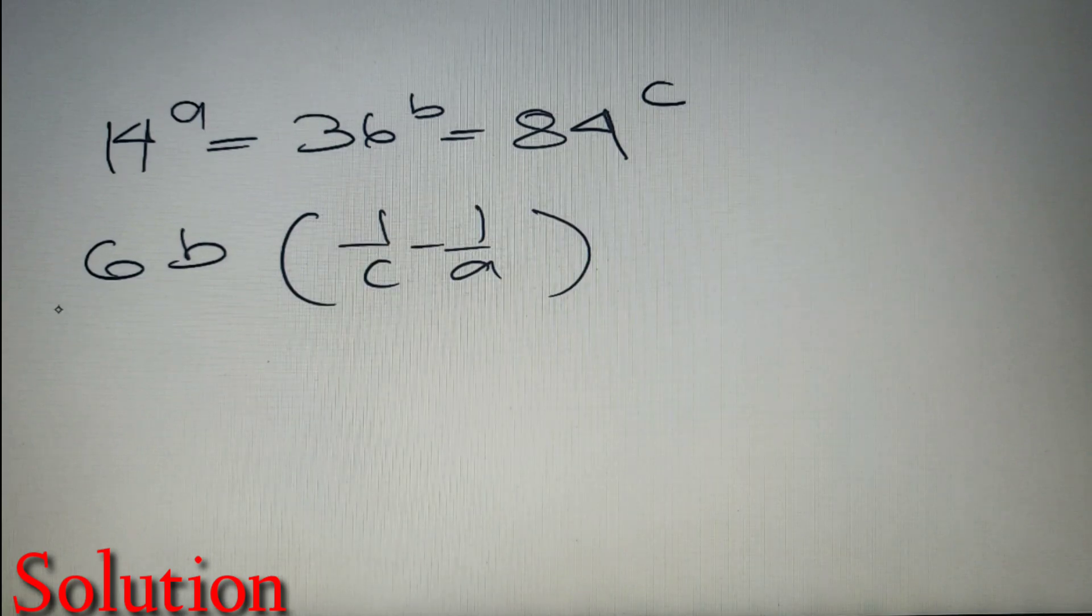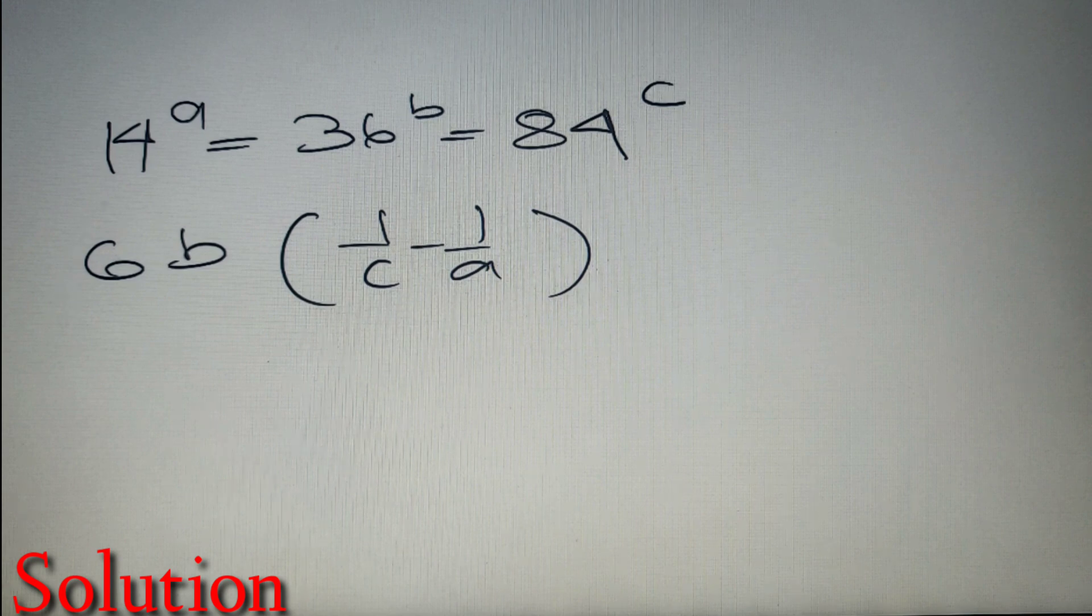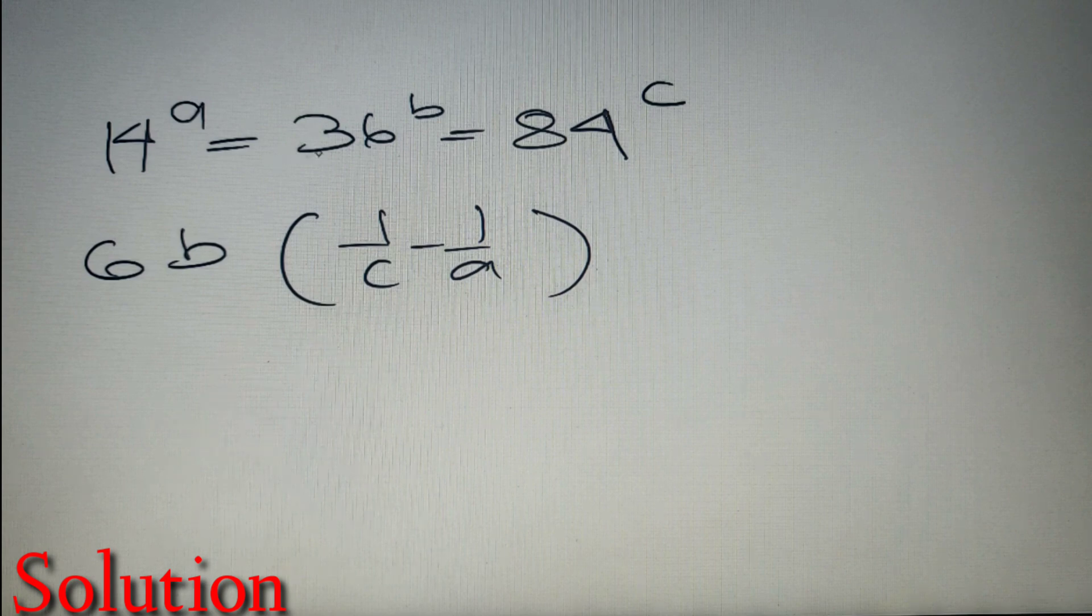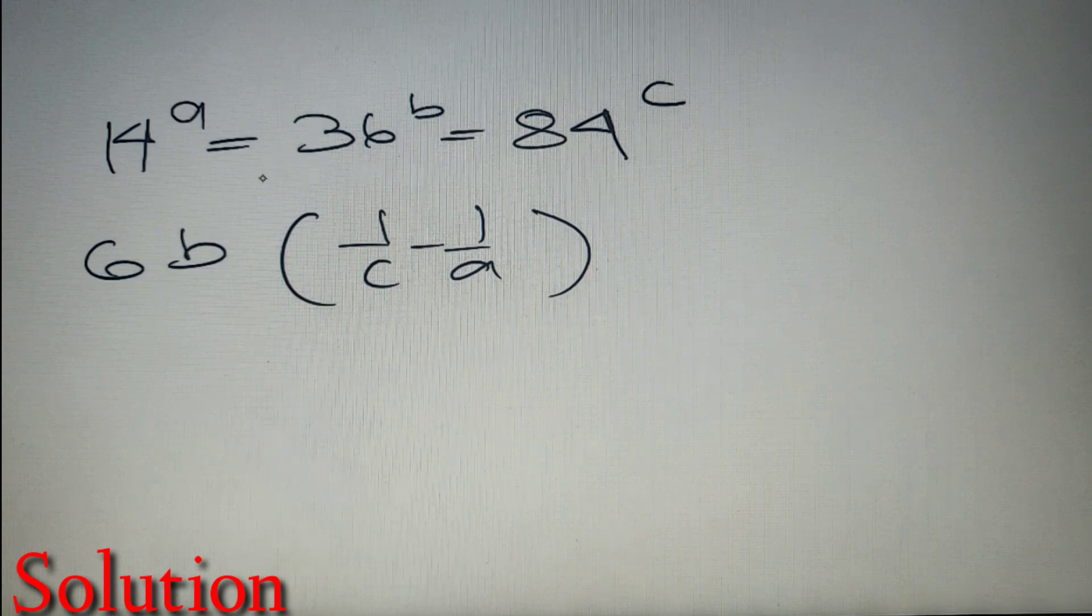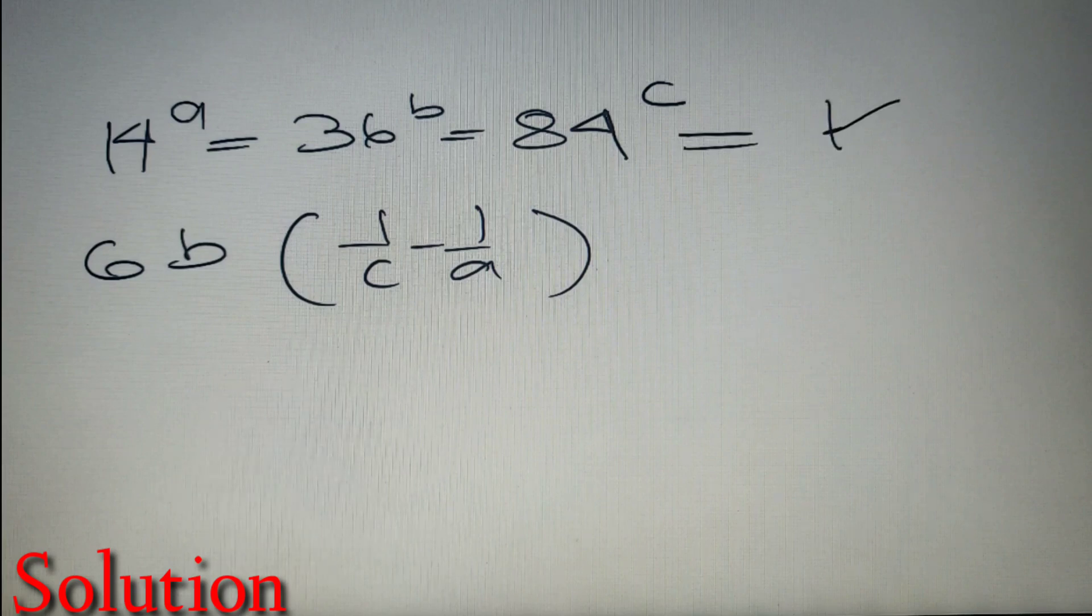So to solve this problem our approach should be simple and straight, and that is we have to find the values of A, B, and C. So we can find the values A, B, and C by using the first equation. So if these three values are equal we can equate it to another value K and then find the value of A, B, and C respectively.